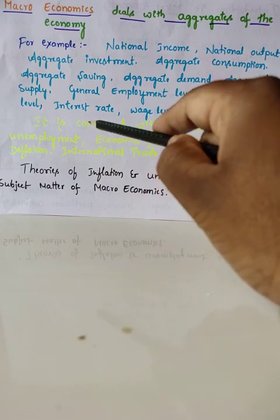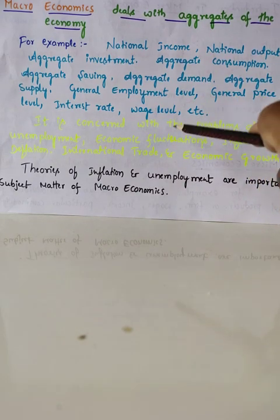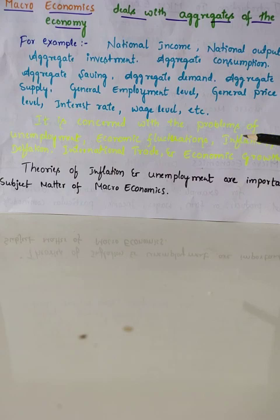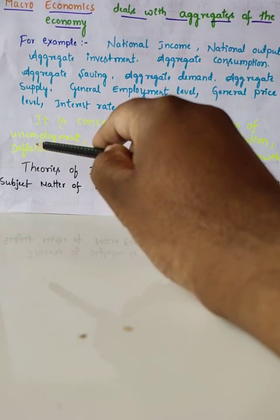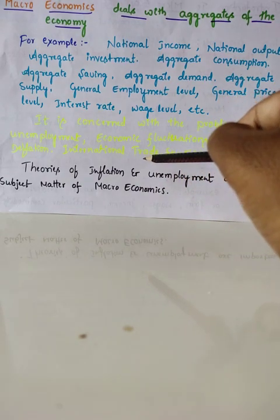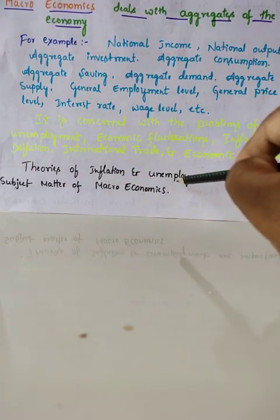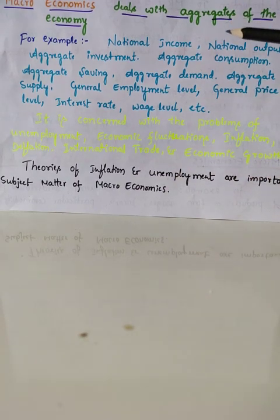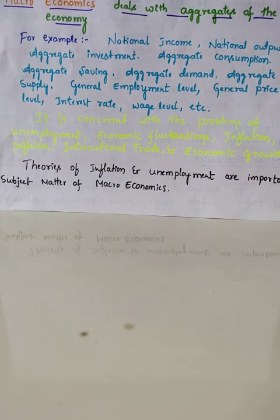Unemployment is a very important problem in our country. Economic fluctuations mean sometimes the economy goes up, sometimes it goes down. Inflation means money value decreases and prices increase. Deflation means prices of goods and services decrease and money value increases. Macroeconomics also covers international trade — exports and imports — and economic growth. Theories of inflation and unemployment are very important subject matter of macroeconomics.